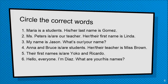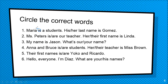Circle the correct word — it's quite easy for you. Maria is a student. He is a verb. And Maria is a woman, so you can use 'her' because Maria is a woman. The possessive pronoun is 'her'.